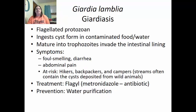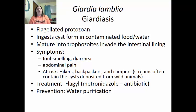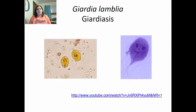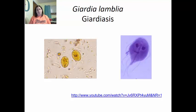Giardia lamblia is a flagellated protozoan. We ingest the cyst form in contaminated food or water; it matures into the trophozoite and invades the intestinal lining, causing foul-smelling diarrhea and abdominal pain. People at risk include hikers, backpackers, and campers, because streams often contain cysts deposited by wild animals. Treatment is Flagyl (metronidazole). Prevention is water purification. Motility can be observed on saline mount, and the flagella are visible; iodine stain is used to examine cellular structures.